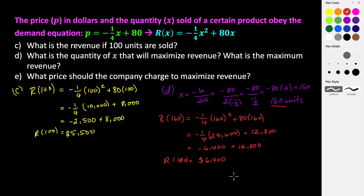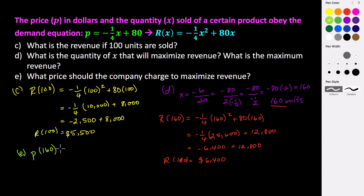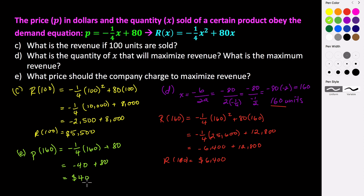This last part asks what price the company should charge in order to maximize their revenue. Our revenue is dependent on the demand function, and this demand function gives us the price we should sell our product for. We take the number of units we want to sell, plug it into X, and that gives us the price. For part E, P at 160 is negative one-fourth times 160 plus 80. 160 divided by 4 is 40, so we get negative 40 plus 80. Our price should be $40 to maximize revenue.